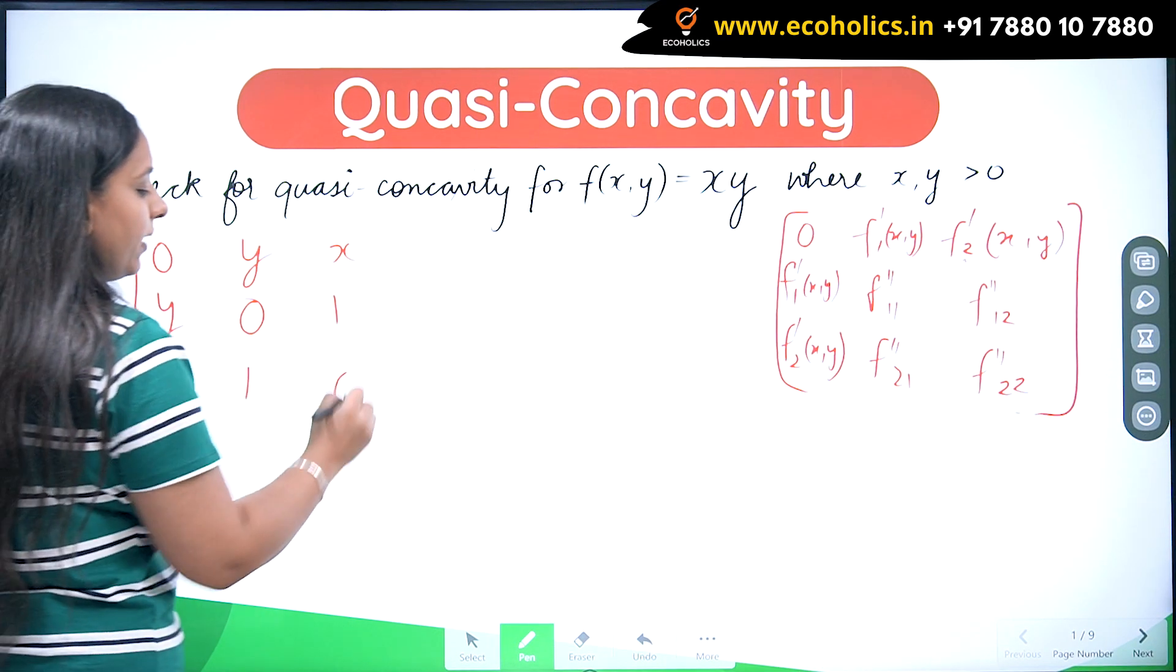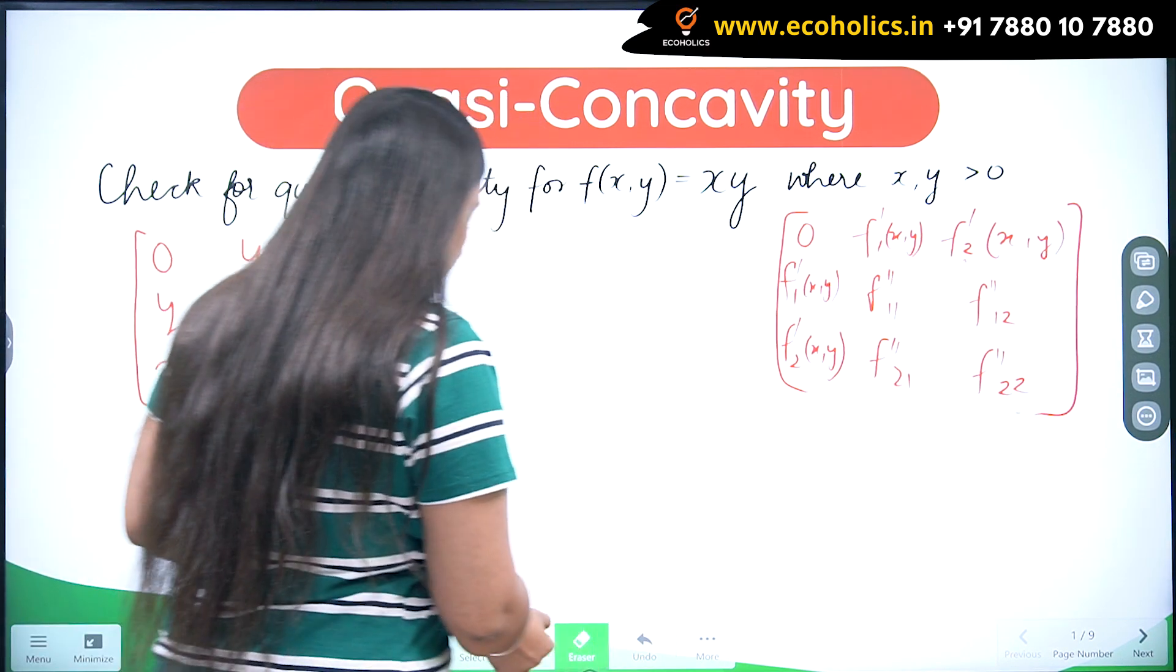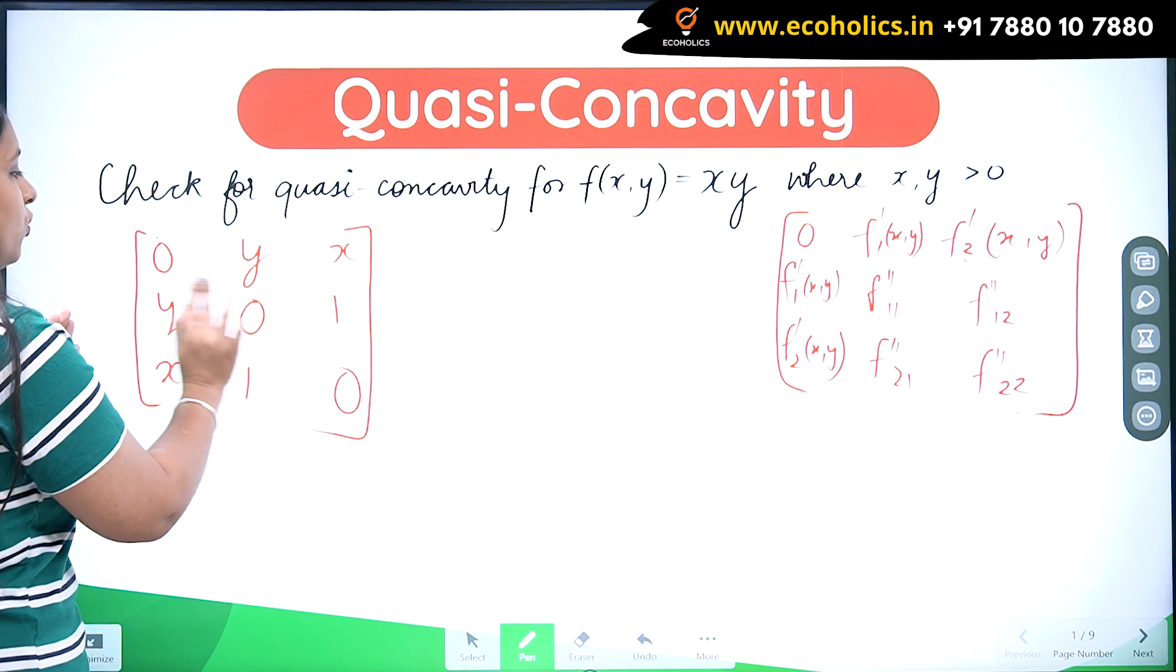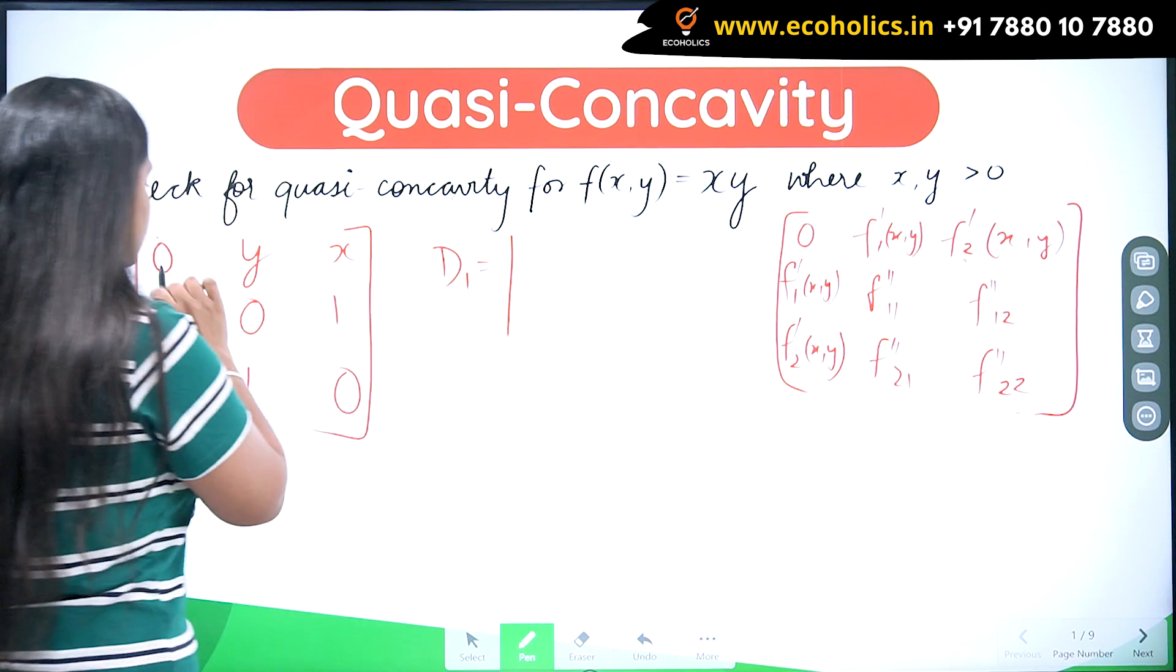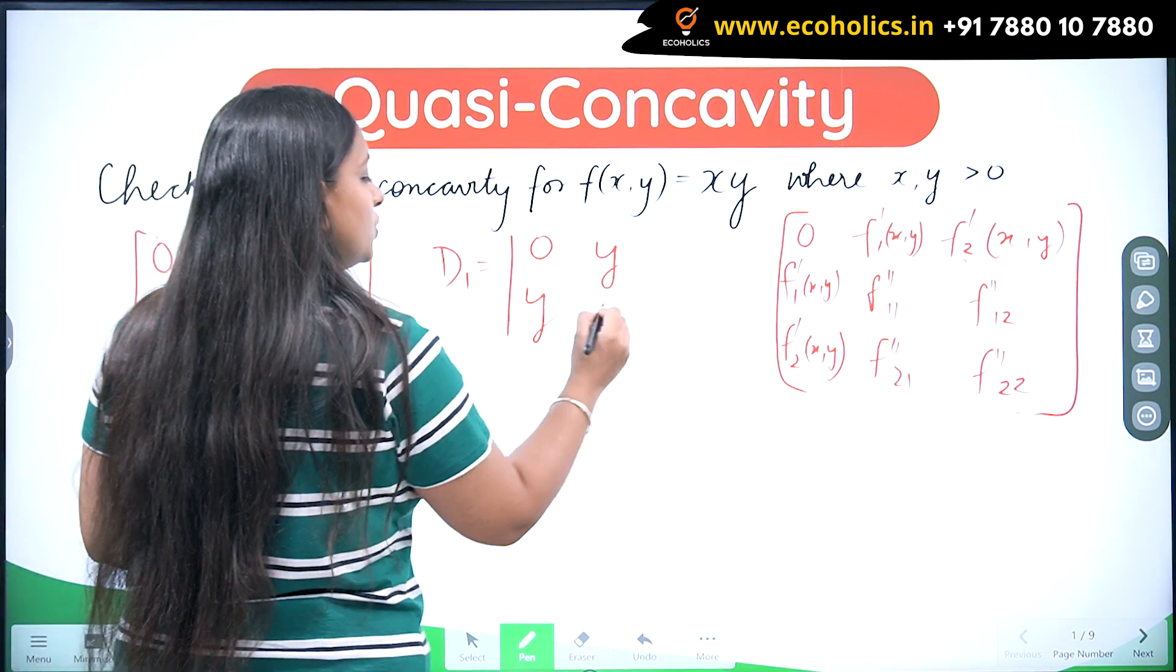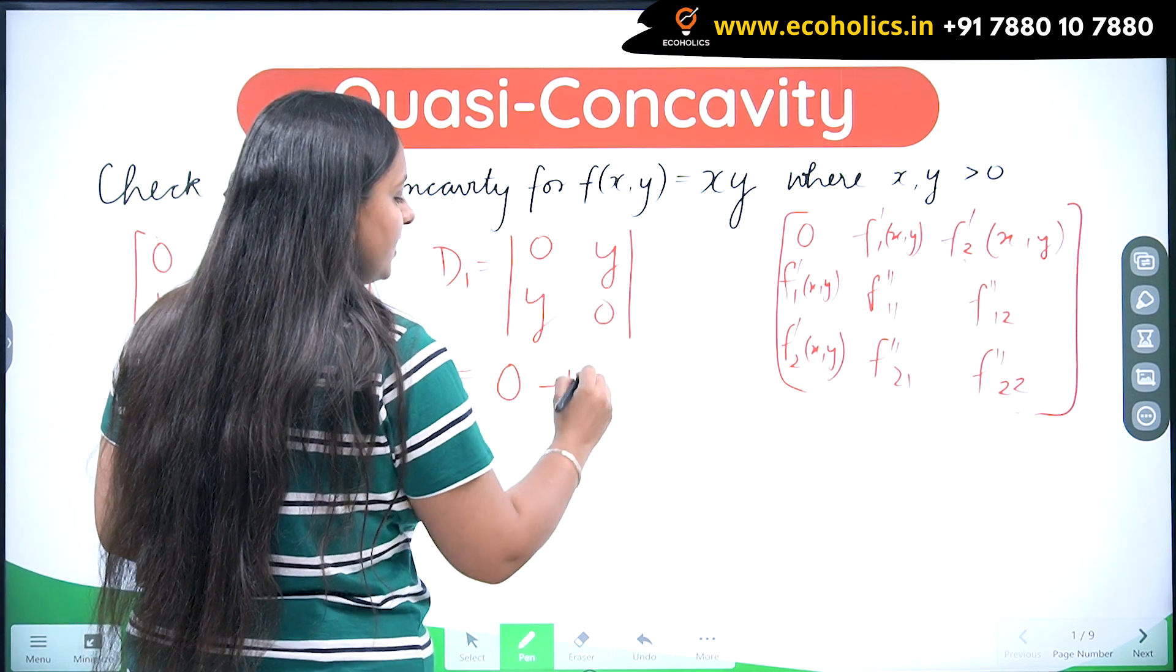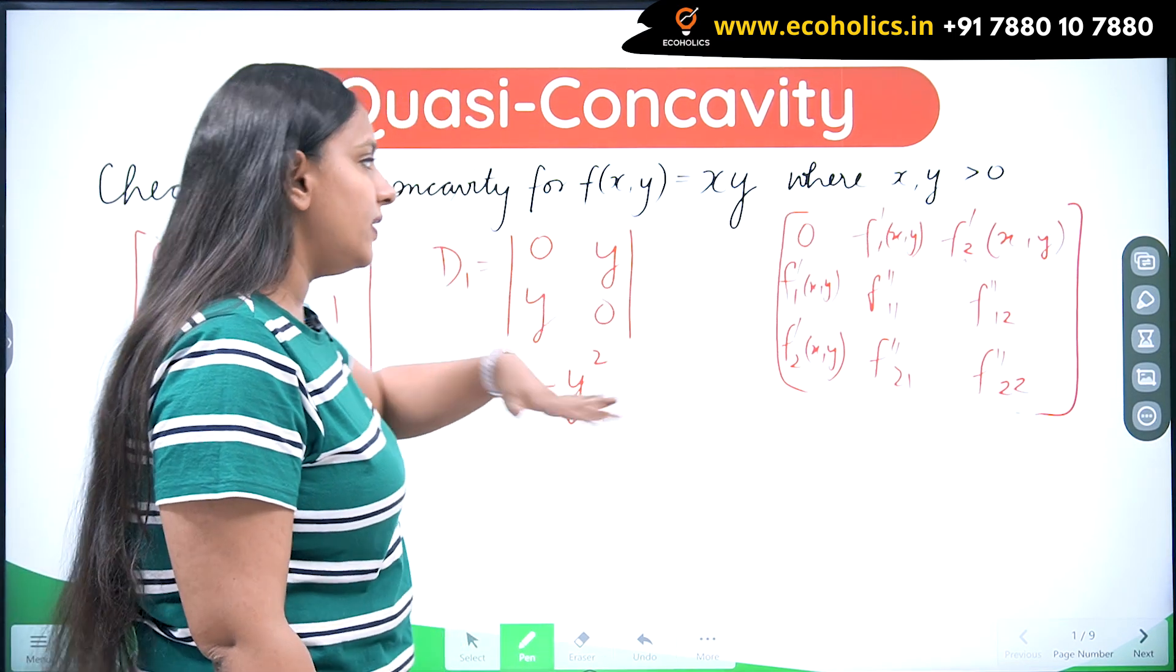Now for checking the even and odd determinants, I would be first taking the determinant of this matrix: 0, y, y, 0. This would be my D1, so it would be equal to 0 times 0 minus y times y equals negative y squared.